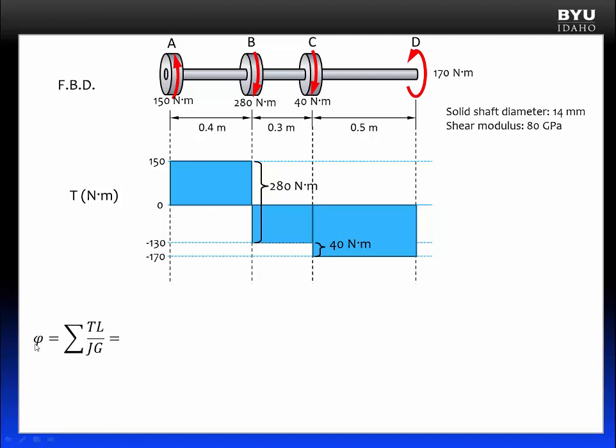Now I'm going to apply this form of the angle of twist equation to this problem. I am going to sum up the angles of twist from A to B, from B to C, and from C to D. From A to B, T is equal to a positive 150 newton meters. L is 0.4 meters. J is pi over 2 times the radius, which is 7 millimeters, or 0.007 meters to the fourth power. And G was given as 80 times 10 to the ninth newtons per meter squared.